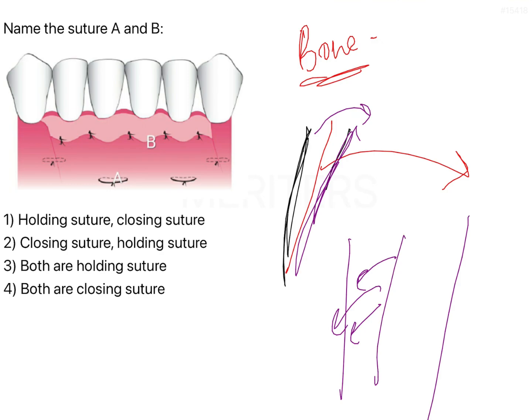As a result, the bone will maintain its vitality; otherwise it is going to be completely necrosed. So when suturing the periosteum, it has to be sutured properly to the bone and it has to stay in place.